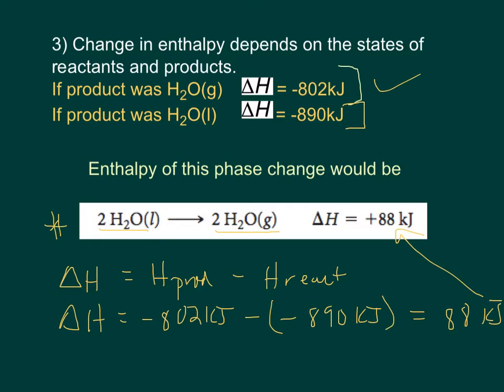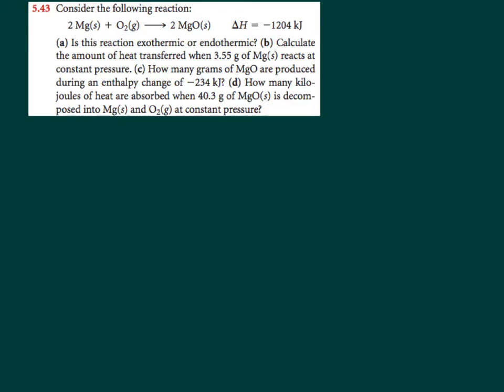We can use these helpful guidelines when solving problems. Here's one problem from your book: two moles of magnesium reacting with one mole of oxygen gas, producing two moles of magnesium oxide, with an associated change in enthalpy of negative 1204 kilojoules — it releases 1204 kilojoules. Part A: Is this reaction exothermic or endothermic? The enthalpy change is negative, so it is exothermic.